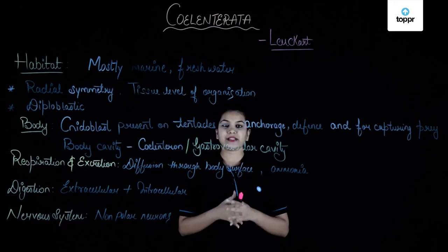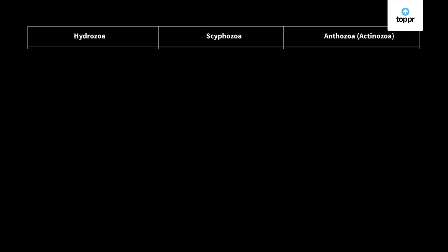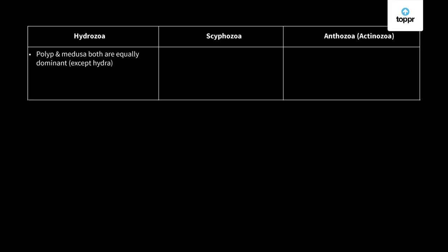Coelenterata is classified into three classes: hydrozoa, scyphozoa, and anthozoa or actinozoa. In hydrozoa, polyp and medusa are both equally dominant, except for hydra. In scyphozoa, the medusa form is dominant whereas polyp is reduced or sometimes absent. In anthozoa, only the polyp form is dominant and medusa is reduced or absent.